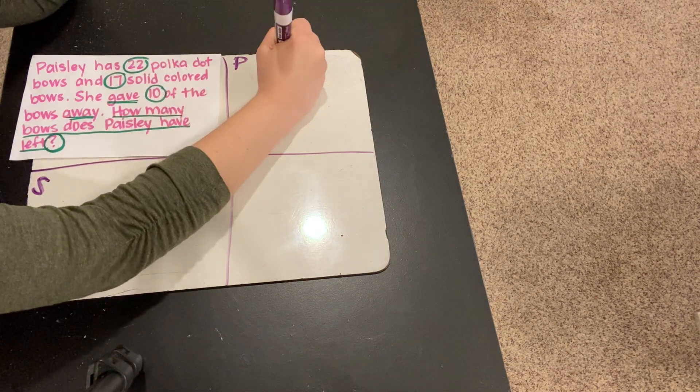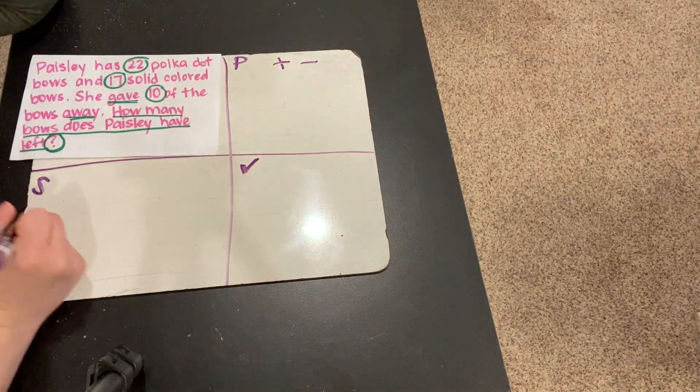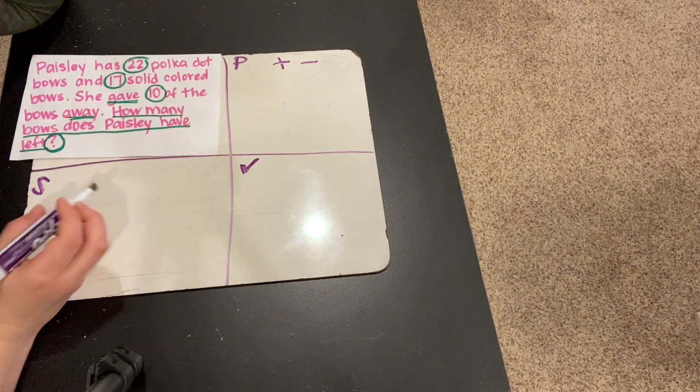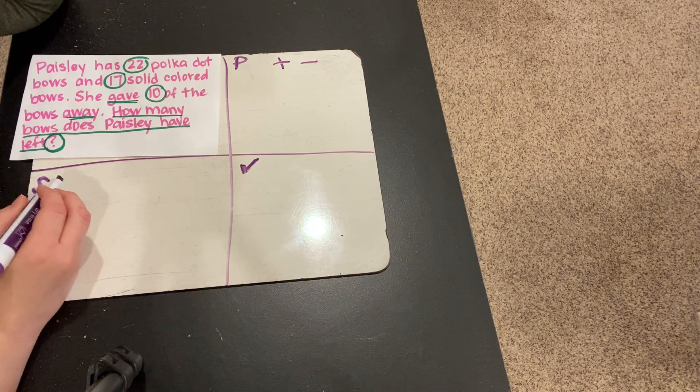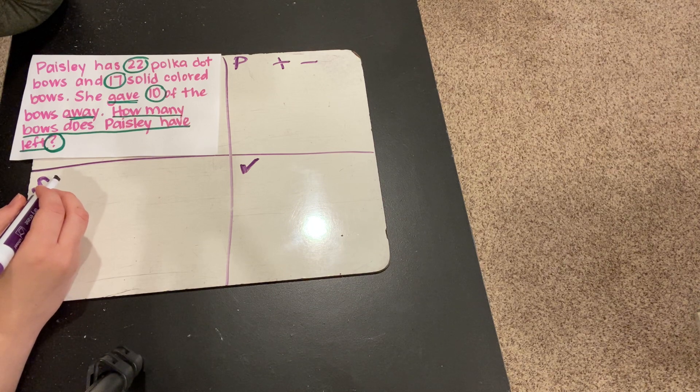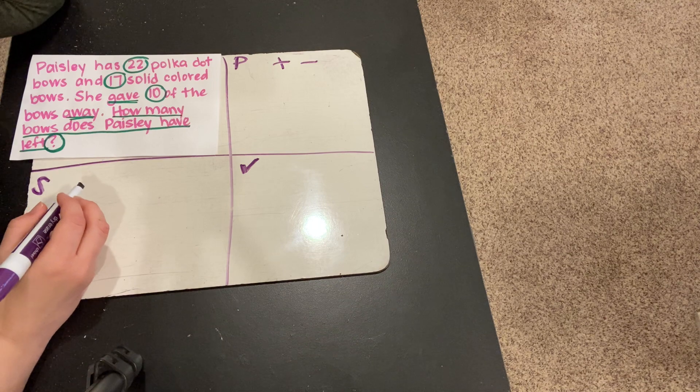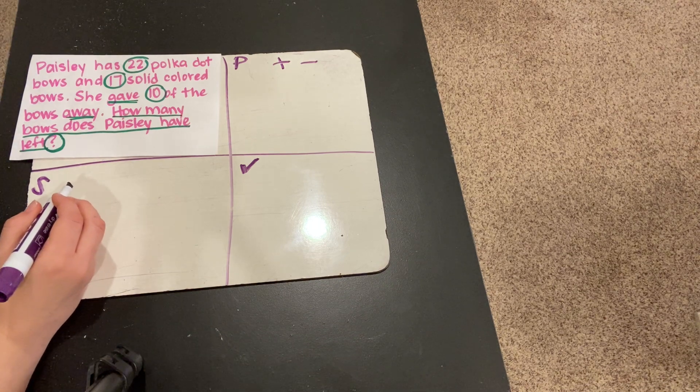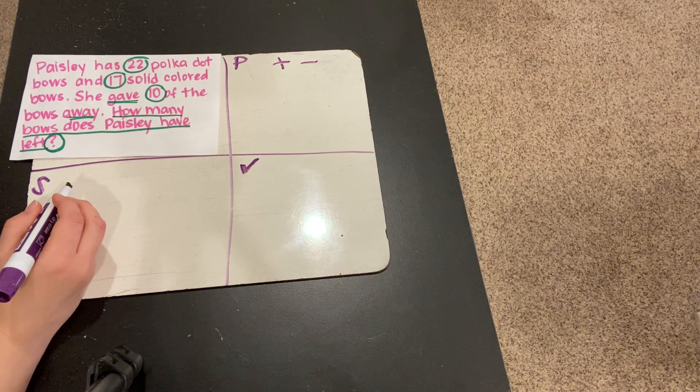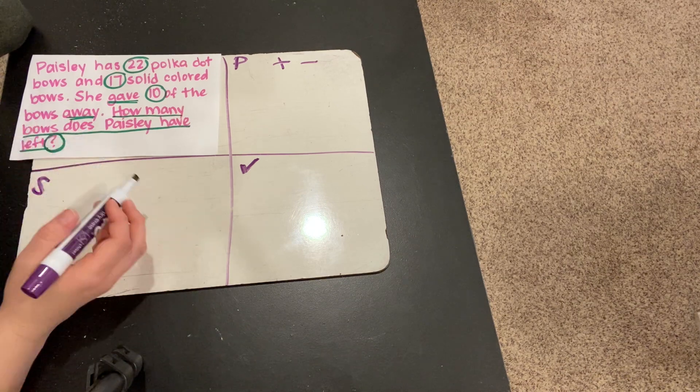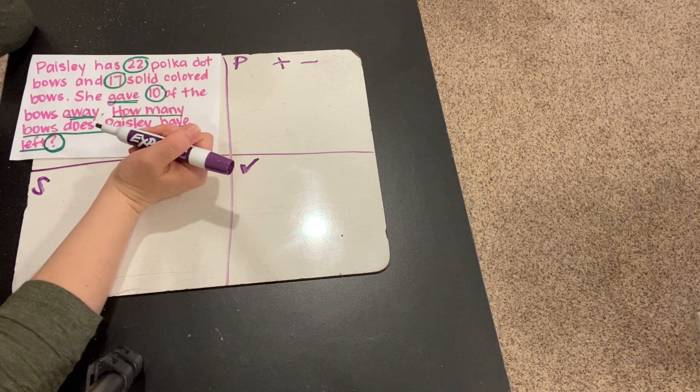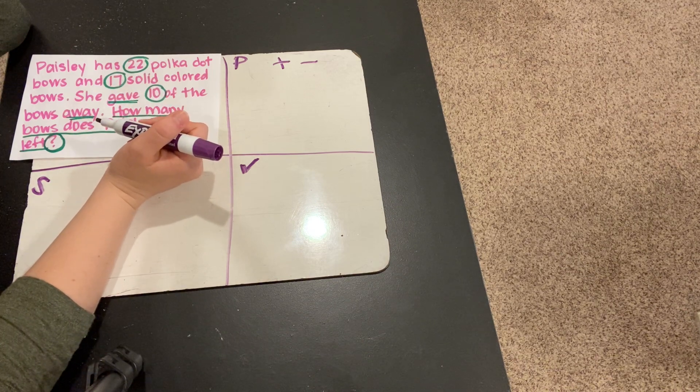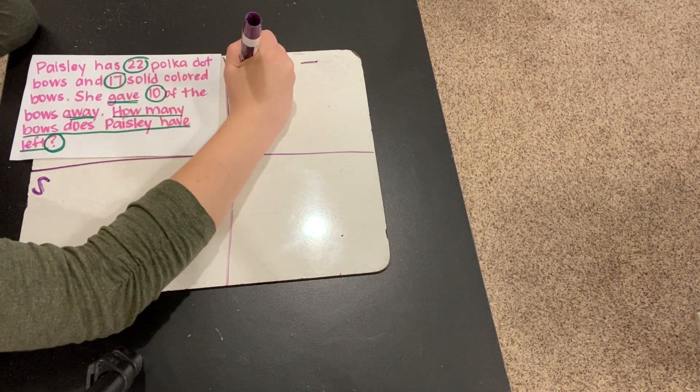Okay, so now let's work through the plan that we're going to use to solve this problem. We're going to decide if we're going to add or subtract or maybe even do both. So, Paisley had 22 polka dot bows and 17 solid colored bows. She gave 10 of the bows away and we need to know how many she has left. So, it sounds like first, before we give 10 of the bows away, we need to figure out how many bows she had before that. So, to do that, we need to do what to 22 and 17?